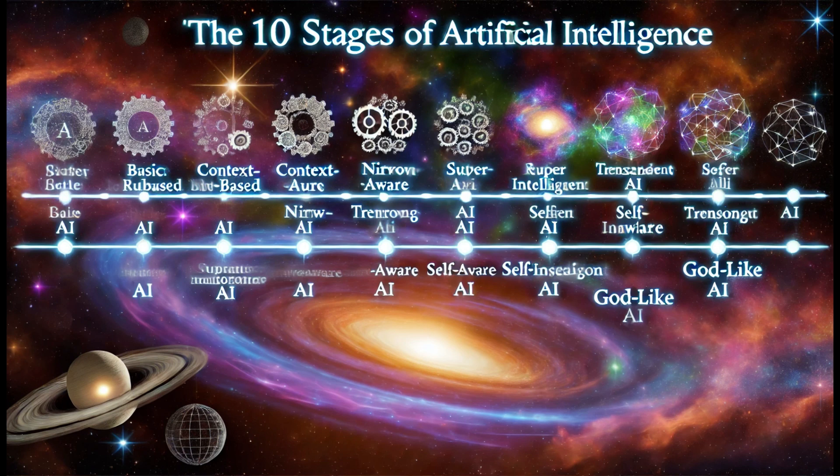Today we are diving into the world of AI. It's fascinating — it really makes you think about the future and where we're headed. We found a video from Future Business Tech that talks about these 10 stages of AI development, from basic algorithms to almost a cosmic entity. We interact with AI every day, usually pretty mundane stuff. So this video starts off with stage one AI, and they call it rule-based AI.